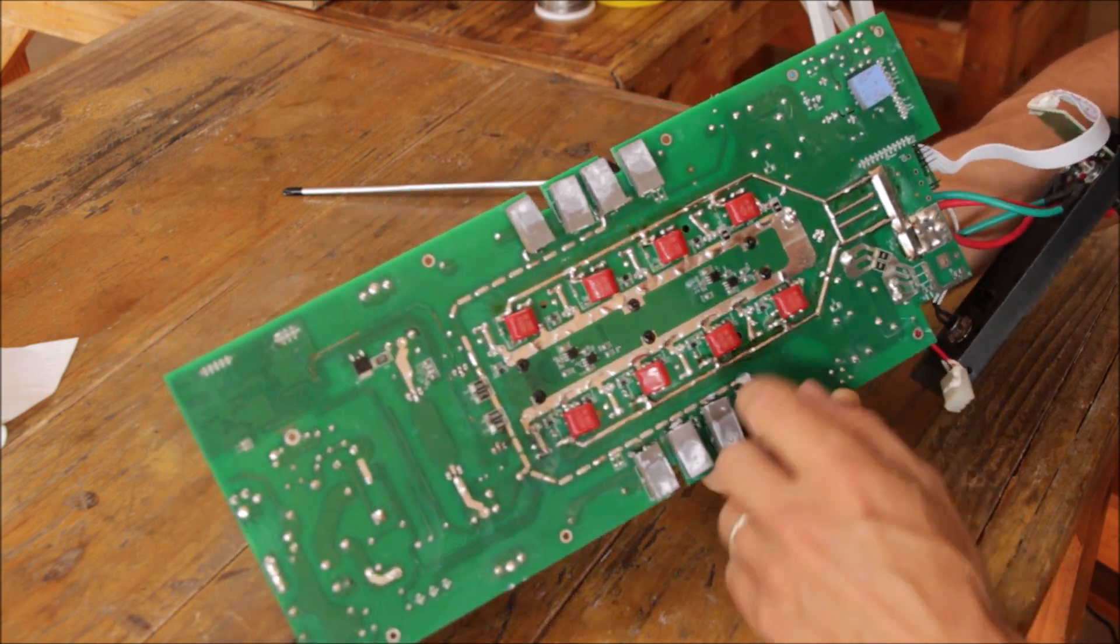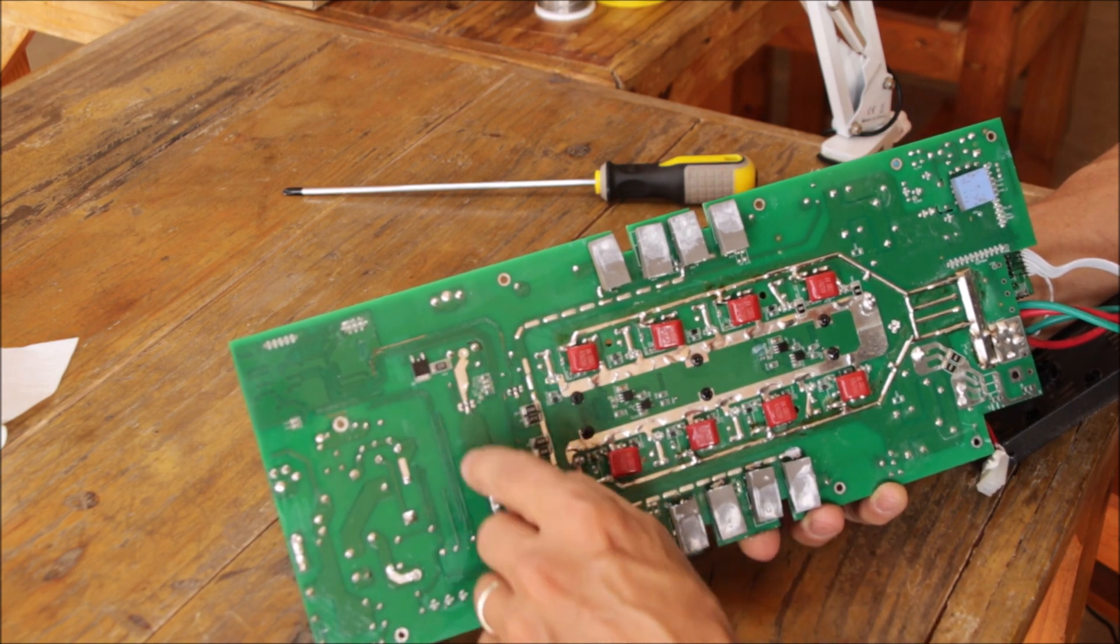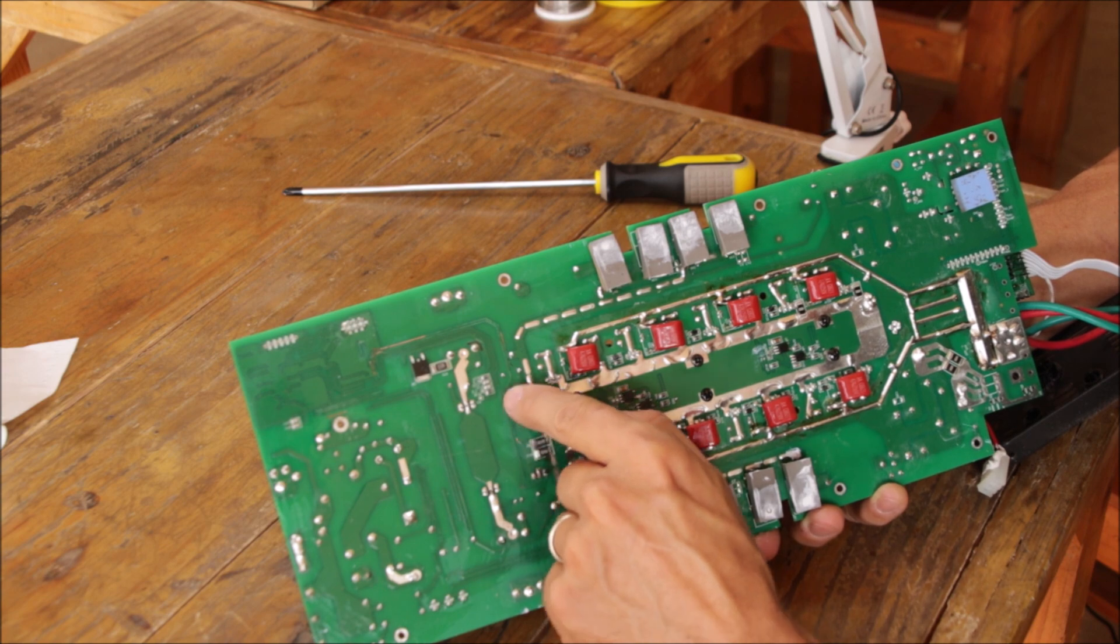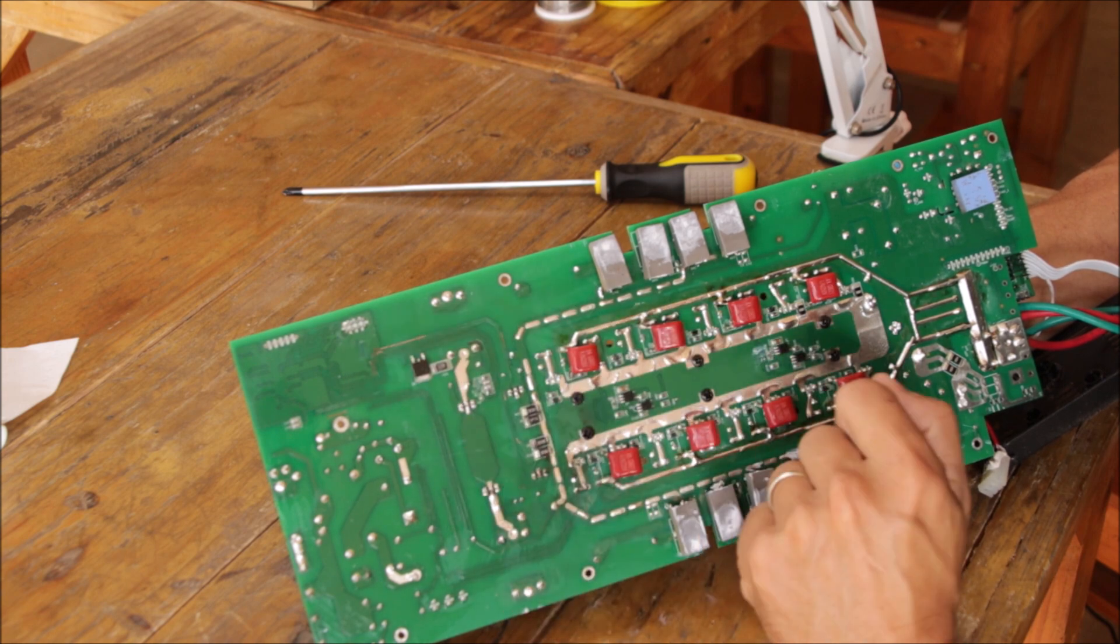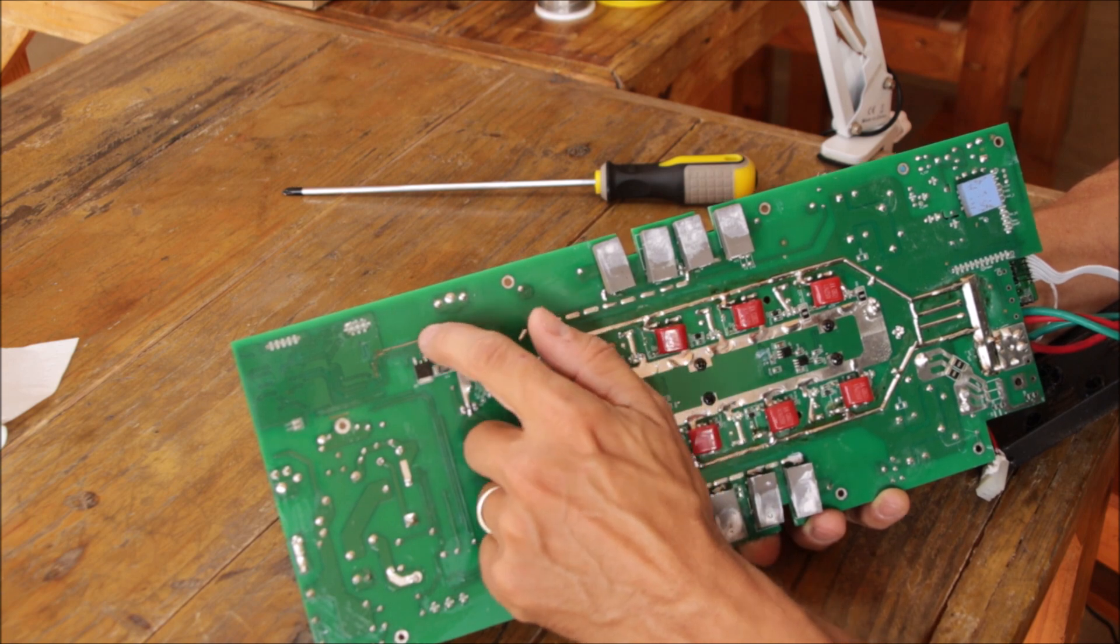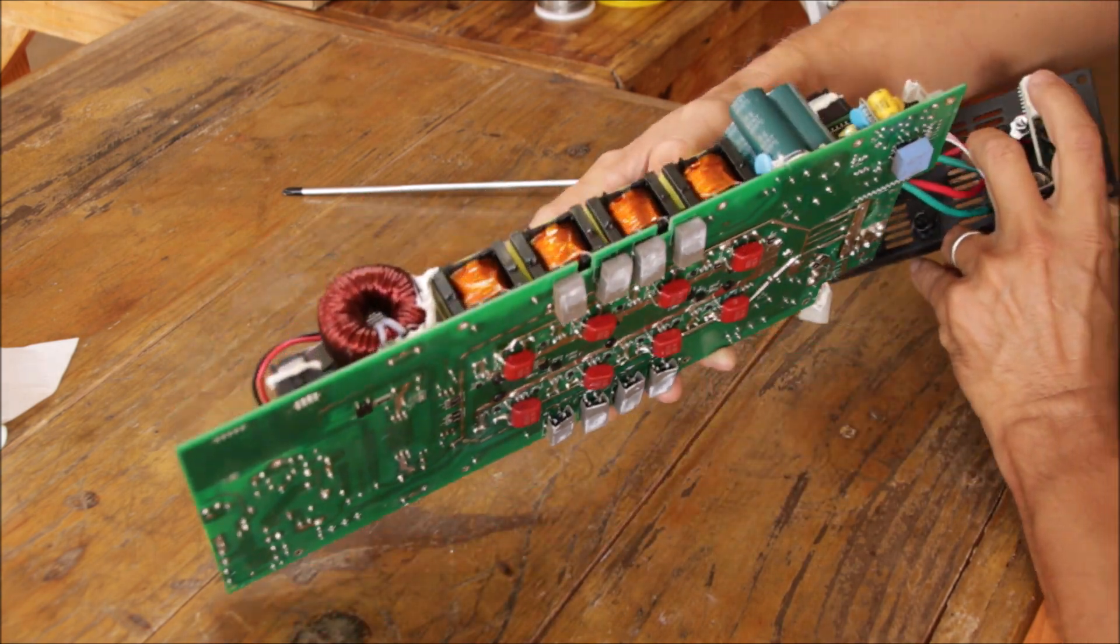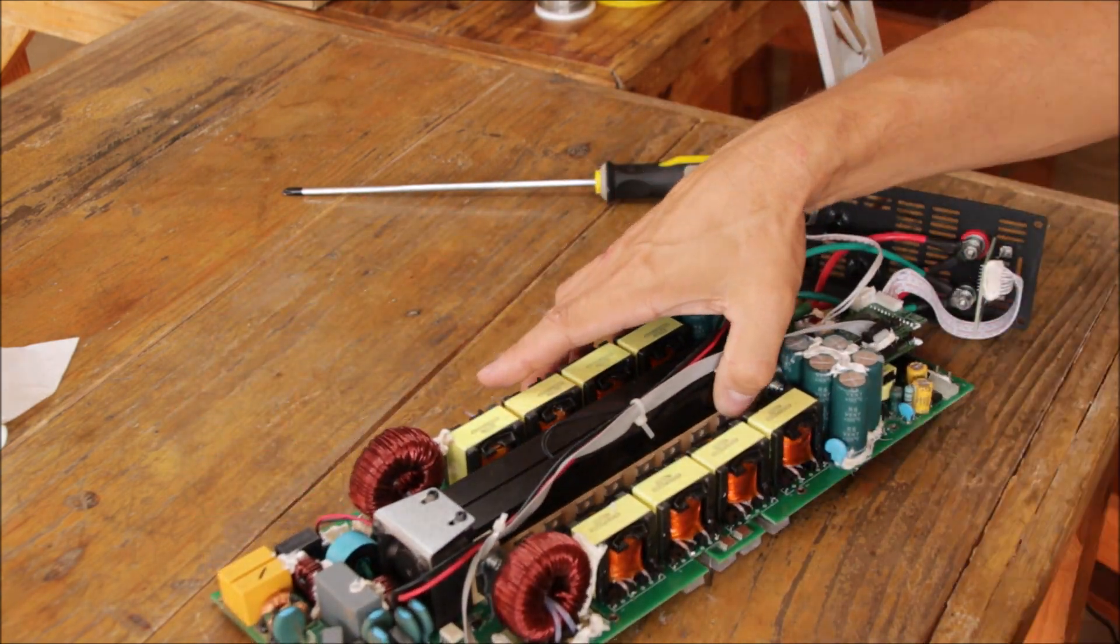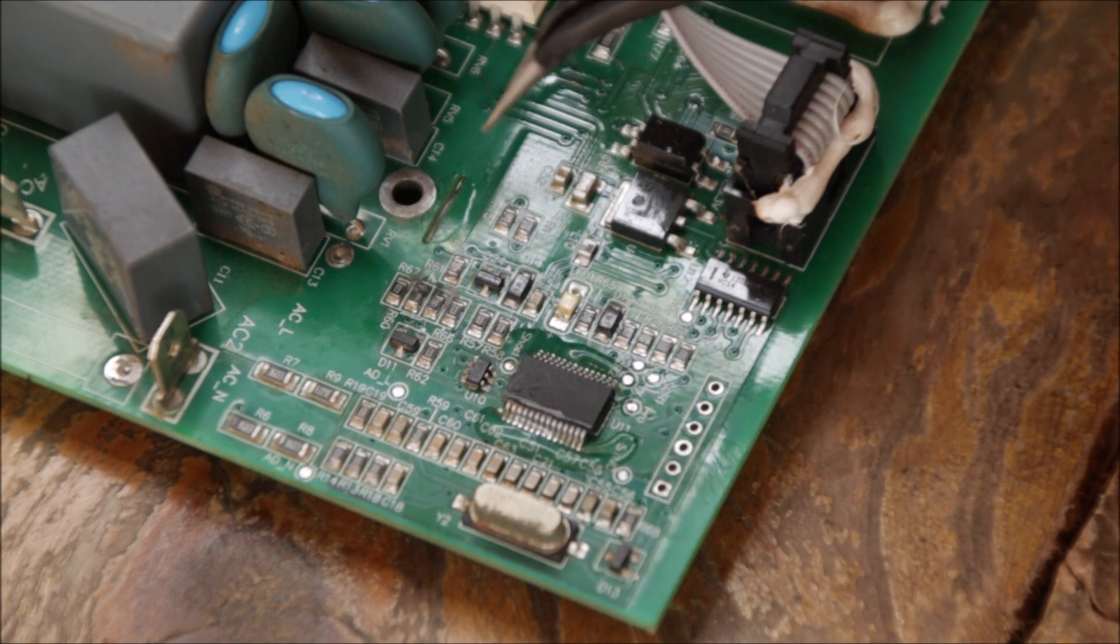Now, the special things which happened to this inverter: We have measurement traces going from the current sense resistors to the measurement circuitry on the other side, and on this board those two traces burned out and even disconnected.